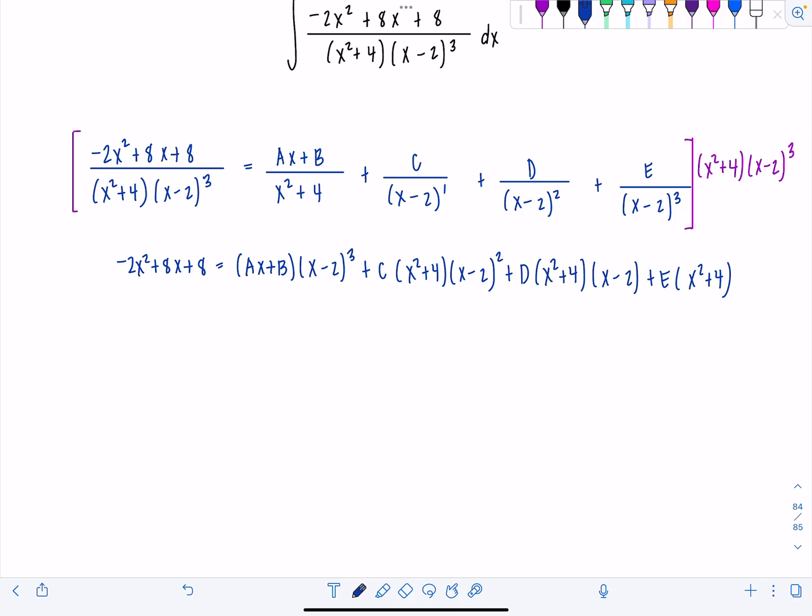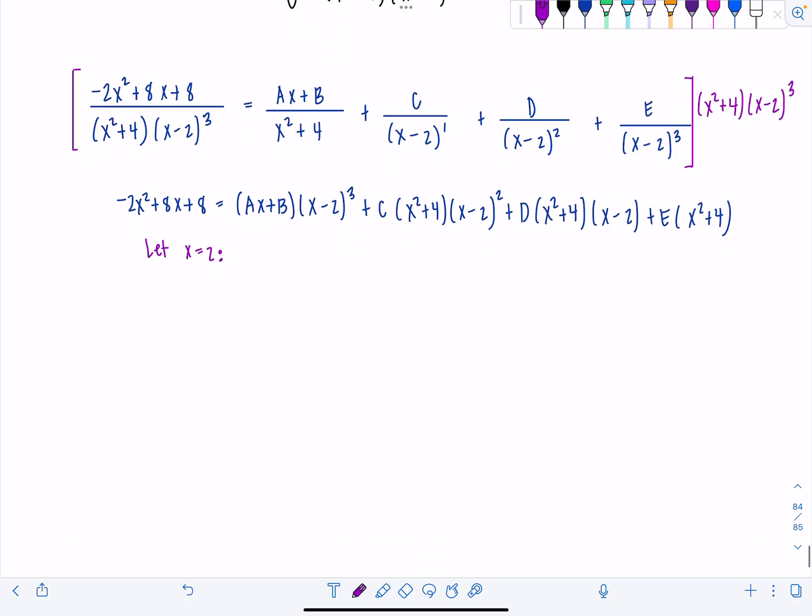So when you have this repeated linear factor, you're going to have to do this kind of process of plugging in values for x to make it 0, finding a constant, and then cleaning up, refactoring, and repeating. Watch what I'm talking about. So we're going to start off, let's let x equal 2, because I noticed that that's a 0 of almost all the factors.